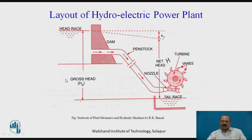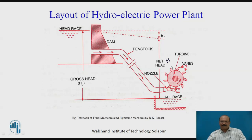Before going to the actual governor, we will study a bit on the layout of a hydroelectric power plant. The storage water provides the gross head, and water flows through the penstock and comes through the nozzle. The nozzle jet hits the runner blades, causing rotation. Our governor controls this particular system.